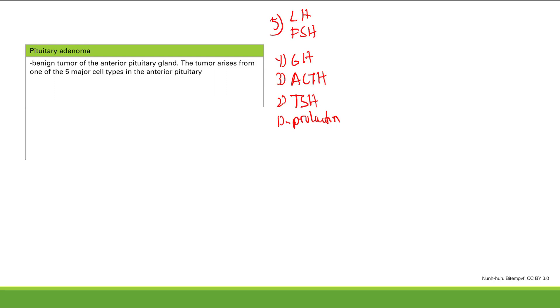Lactotrophs — because prolactin makes milk. Thyrotrophs, corticotrophs, gonadotrophs — gonadotropin releasing hormone, that's self-explanatory. The only one really hard to remember is somatotrophs.